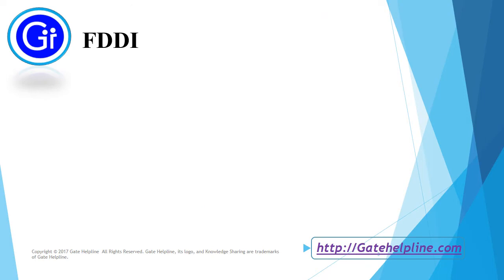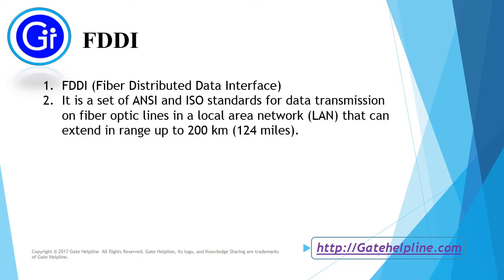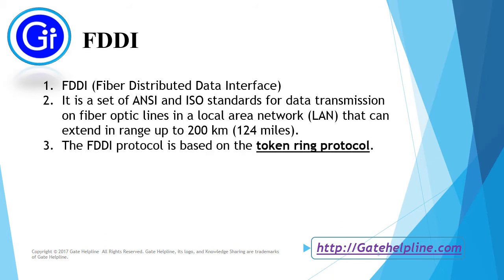Now we will see what is FDDI. FDDI stands for Fiber Distributed Data Interface. It is a set of ANSI and ISO standards for data transmission on fiber optic lines in a local area network that can extend in range up to 200 km, i.e. 124 miles. The FDDI protocol is based on the token ring protocol.